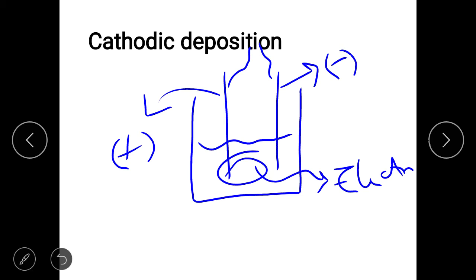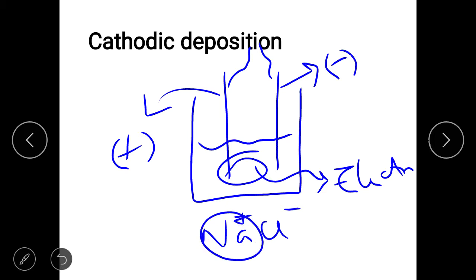For example, if the electrolyte is a NaCl solution, Na⁺ is the cation and Cl⁻ is the anion. Under the influence of the external field, the metal ion — Na⁺ — will migrate towards the negative electrode, which is the cathode, and it will deposit on the surface of the cathode as a thin film.